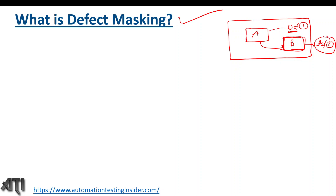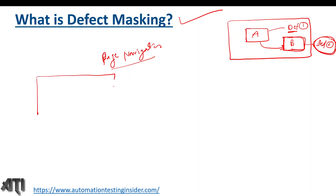This part will be unnoticed because we cannot execute it. So the defect in functionality B is called a mask defect. We usually see defect masking in page navigations.